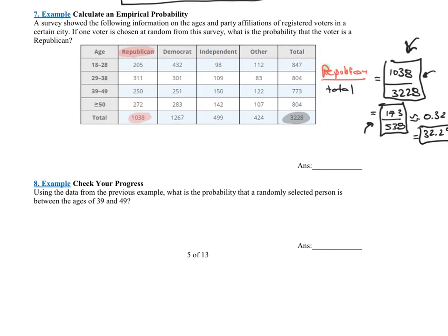Let's go ahead and look at example 8. Using the data from the previous example, what is the probability that a randomly selected person is between the ages of 39 and 49? Let's look at this chart. Here's 39 to 49. The total that were 39 to 49 was 773. Again, if I want to know the probability between 39 to 49, I'm going to do how many of them were actually between 39 and 49, which was 773. I'm going to divide that by the total number, which was 3,228.